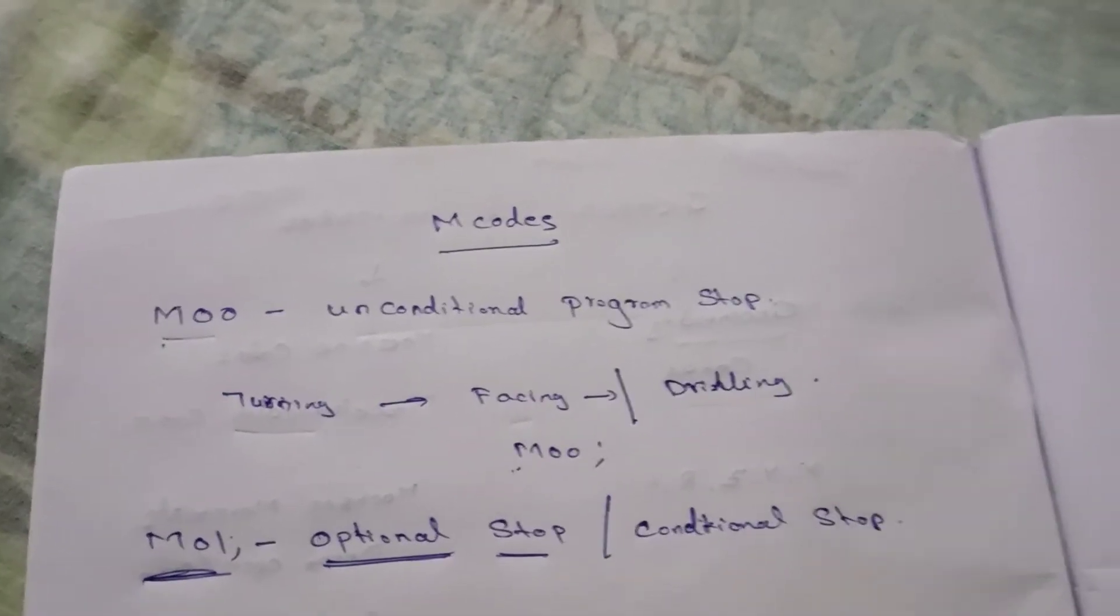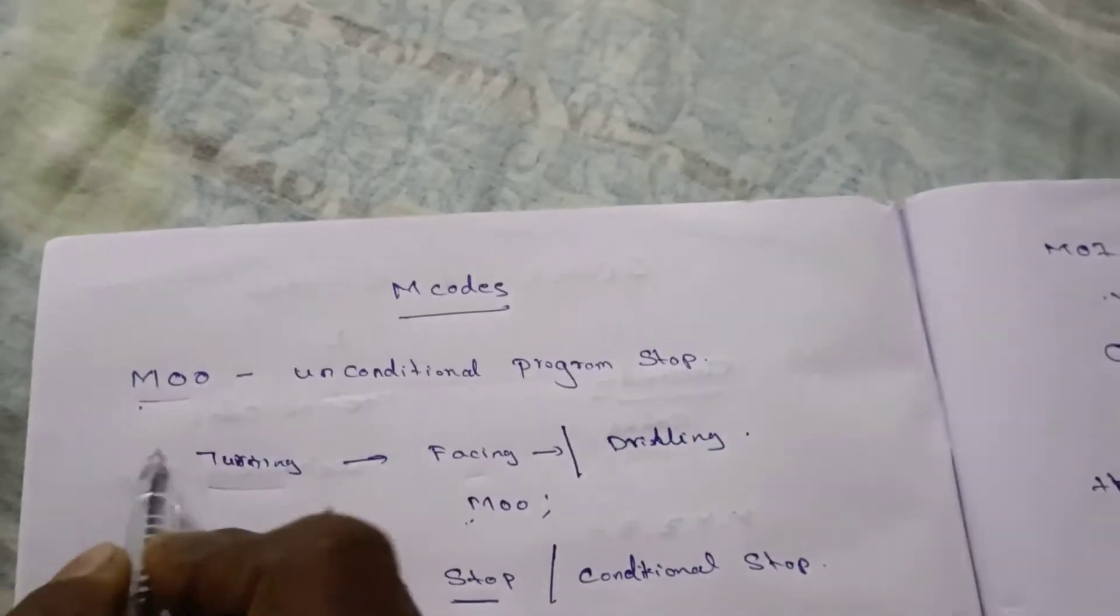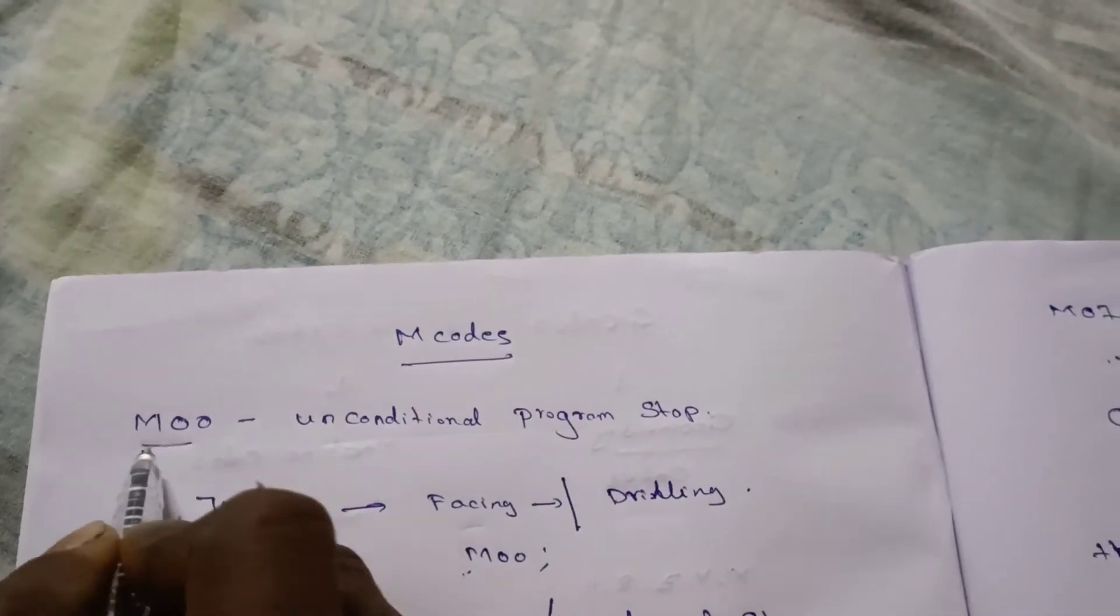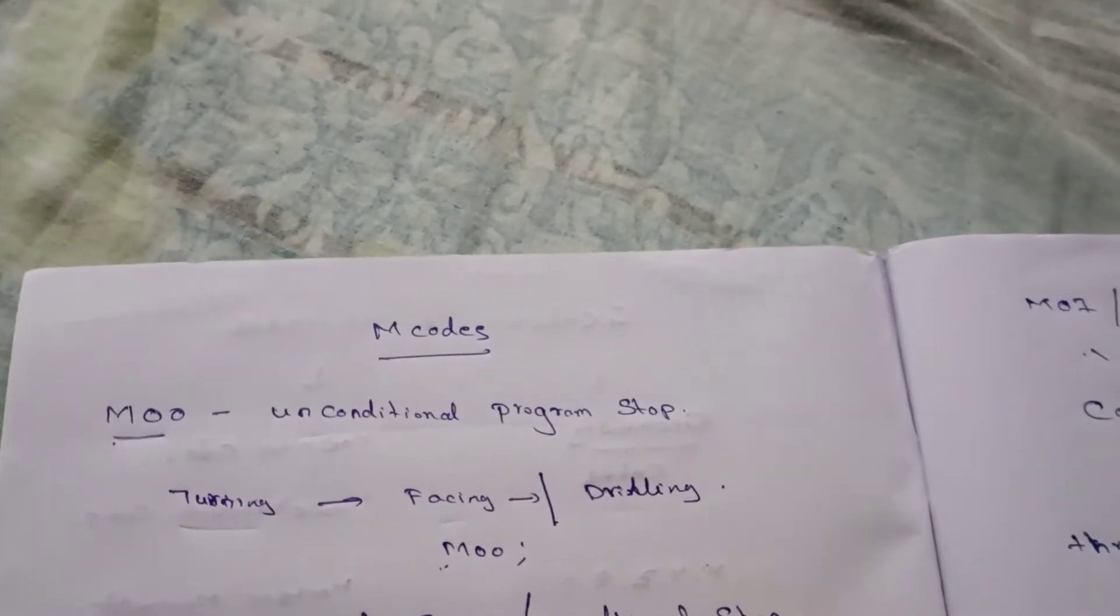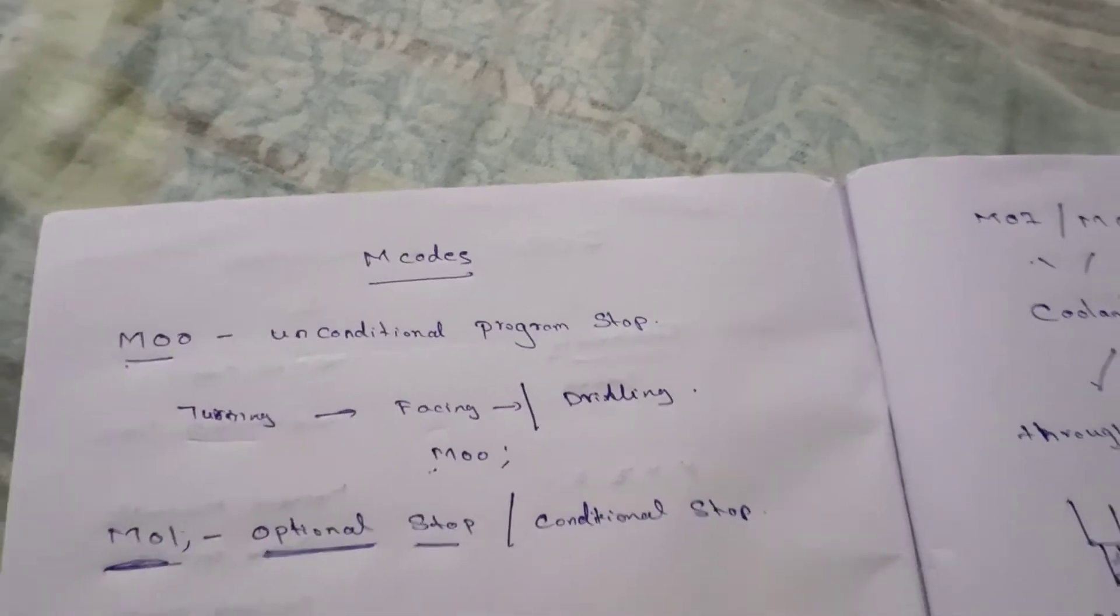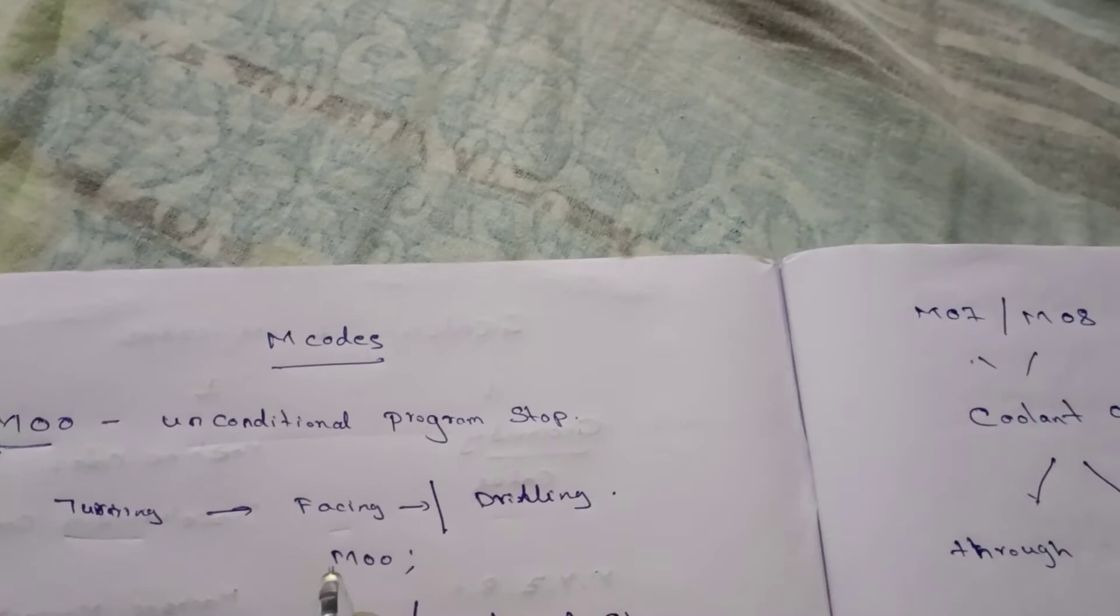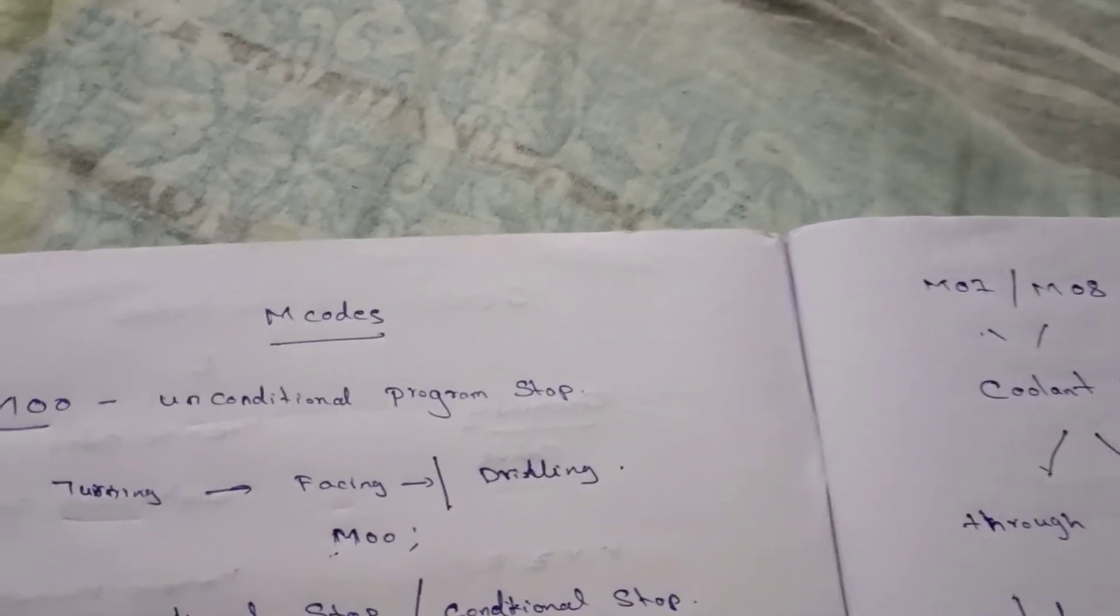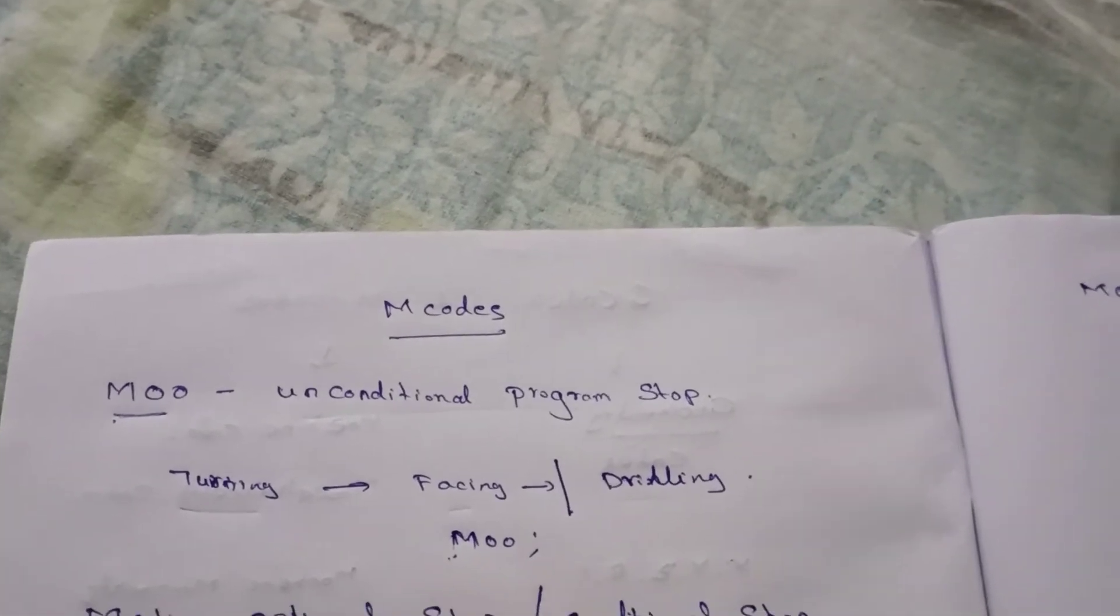At first, M00. It means unconditional program stop, unconditional. When you introduce M00 in the program, it will stop without your interference.